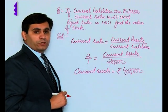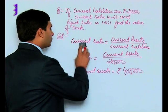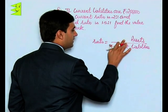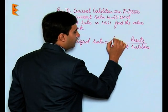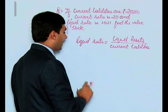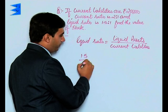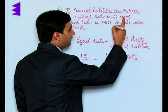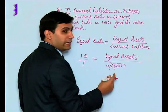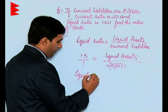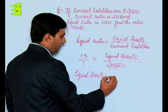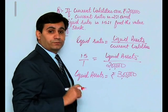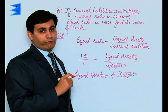Coming to liquid ratio, we are given a liquid ratio of 1.5 is to 1. The formula for liquid ratio is: liquid assets upon current liabilities. The liquid ratio is equal to liquid assets upon current liabilities — 1.5 upon 1. The liquid assets we need to find, and the current liabilities are given to be 2 lakh. By cross multiplying, liquid assets are equal to 1.5 into 2 lakh, that is rupees 3 lakhs.